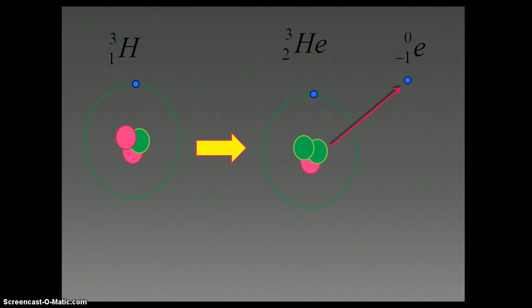Let's say it undergoes beta negative decay. What would happen in this case is that we would get an isotope of helium, helium-3, and an electron would also be released. And if you notice, we have two protons and one neutron.